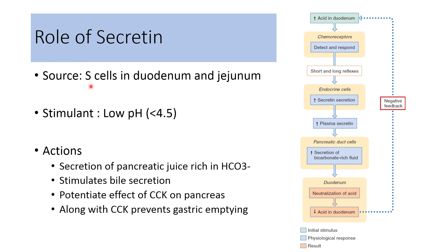Secretin is secreted by the S cells in the duodenum and jejunum; the stimulation is through low pH, usually less than 4.5. Secretin increases secretion of pancreatic juice rich in bicarbonate. It stimulates bile secretion and potentiates the effect of cholecystokinin on the pancreas, and along with cholecystokinin it prevents gastric emptying. Acid in the chyme stimulates chemoreceptors in the duodenum, which through short and long reflexes stimulates endocrinal S cells, increasing release of secretin. Plasma secretin level increases, acting on pancreatic acinar cells to increase secretion of bicarbonate-rich fluid entering the duodenum to neutralize acid, then via negative feedback decreasing release of secretin.